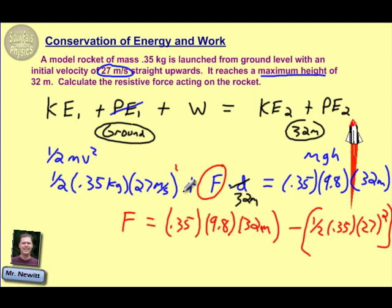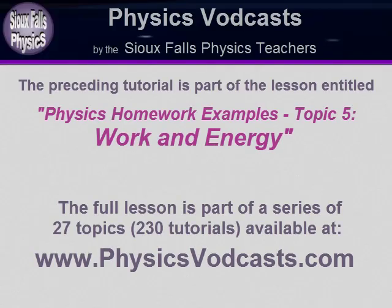And when I do that, I should end up with a negative value for my force, which is what I would expect here. Because remember, this was a resistive force that was slowing the rocket down. And indeed I do. I get a negative 0.487 newtons of resistive force acting on that rocket.